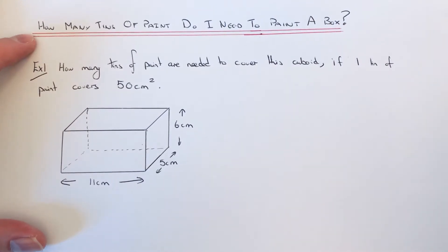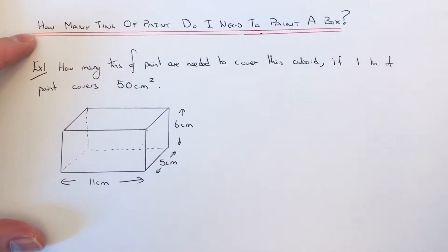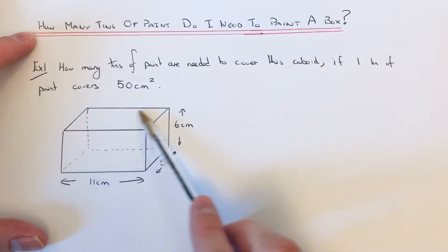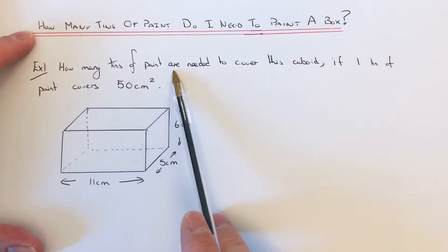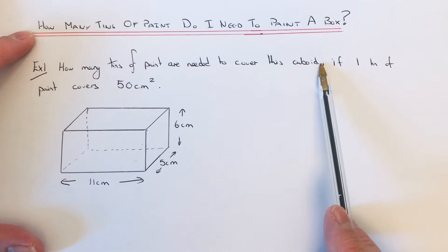Hi guys, welcome back. This is Maths 3000. Today I'm going to show you how many tins of paint you need to buy to paint a box, so all these surfaces of the box are going to be painted. Let's have a look at the example here. How many tins of paint are needed to cover this cuboid?